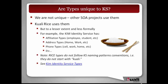Is this unique to Kuali Student? It really isn't. It's actually a common problem in a lot of other systems. Kuali Rice uses them too — if you look at the KIM Identity Services, they have affiliation types, address types, phone types, and all kinds of things like that. Rice types are used similarly to Kuali Student, but there are some differences in how they manage them — they don't have the same naming patterns, and they have different mechanisms for how a type affects the actual operation of what's going on. But it's not a completely new idea; we didn't invent it.